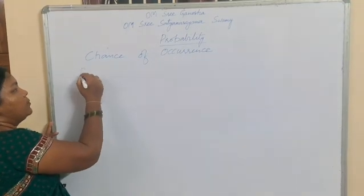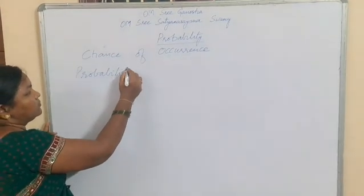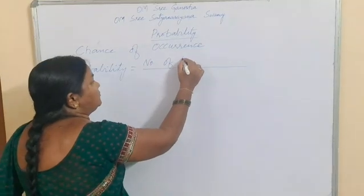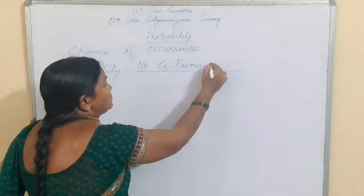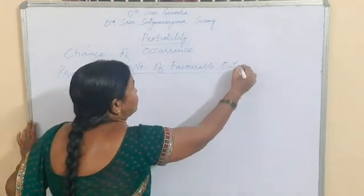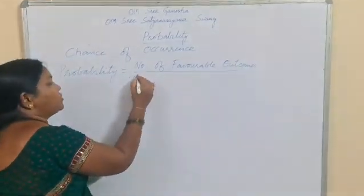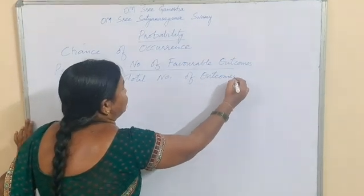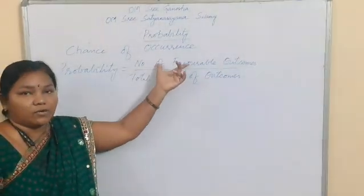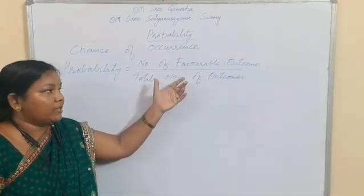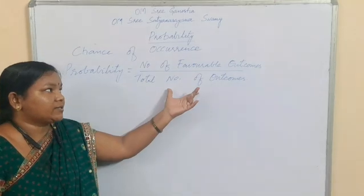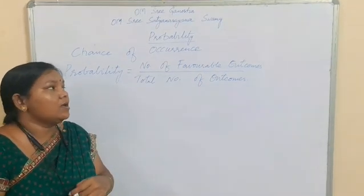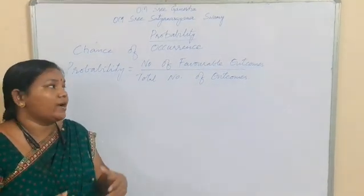Probability is defined as: probability equals number of favourable outcomes divided by total number of outcomes. That means, in all the total chances, what are we getting of favourable outcomes? Favourable outcomes means what we need from the given portion. That is called as favourable outcomes.